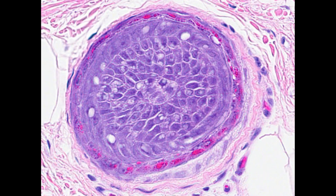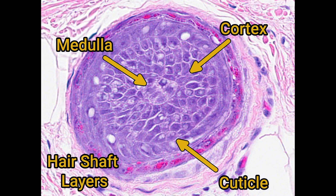Moving up the hair follicle, the dermal papilla disappears and the matrix cells begin to differentiate into cell lines that will form the hair shaft and those that will form the follicular epidermis. You can start to see differentiated cells forming discrete layers. The hair shaft is formed of three layers: the medulla in the centre, the cortex in the middle, and the cuticle around the outside. The next two layers form the follicular epidermis.